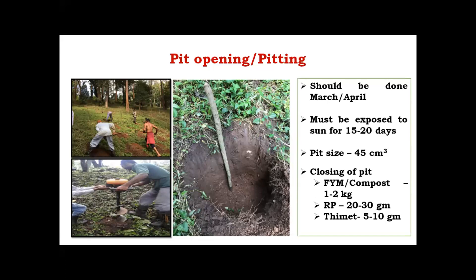The optimum size of the pit should be 45 centimeter cube — that is one and a half feet in depth, width, and height. This is standardized because coffee is a perennial crop lasting 30 to 60 years, and the pit size must correspond to the eventual canopy and bush size. After exposing the pit for 15 to 20 days, we should close it with a mixture of FIM or compost at 1 to 2 kg per pit, mixed with raw phosphate at 20 to 30 grams to support proper establishment of the root system.